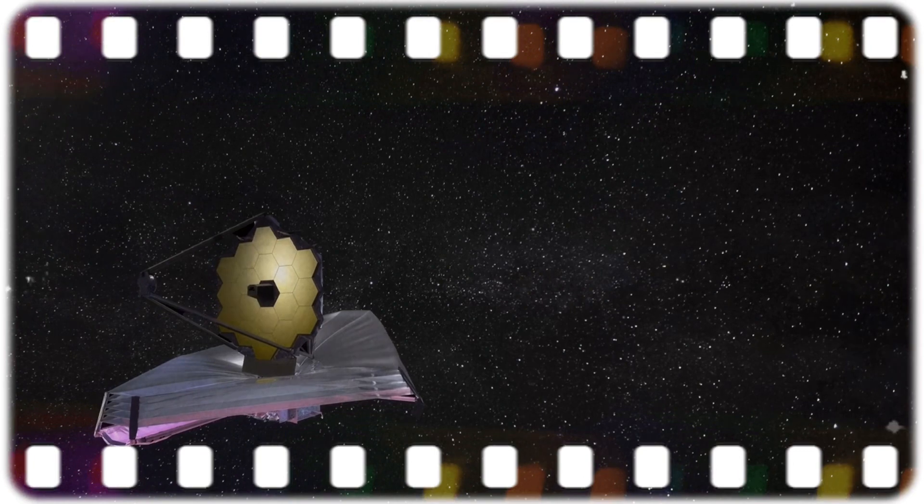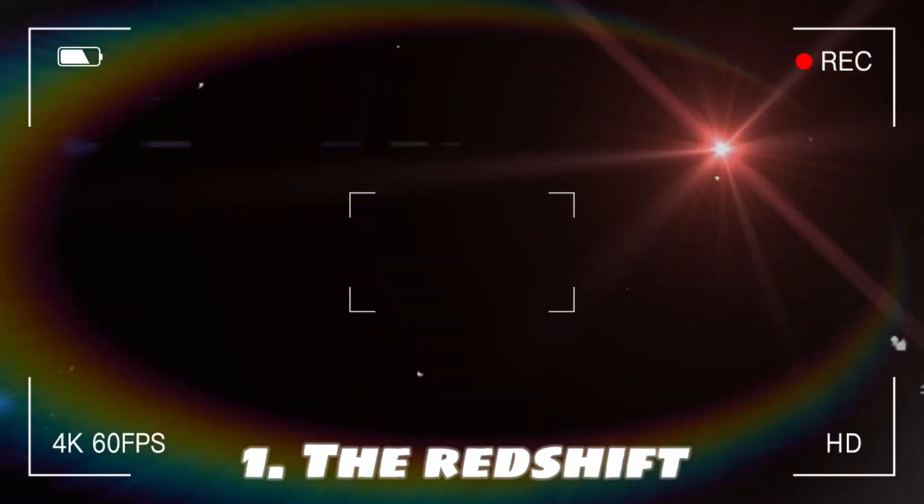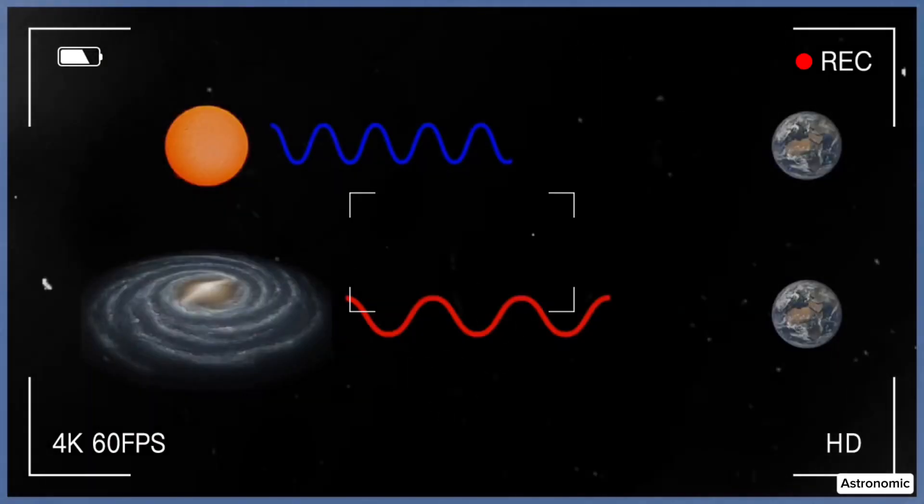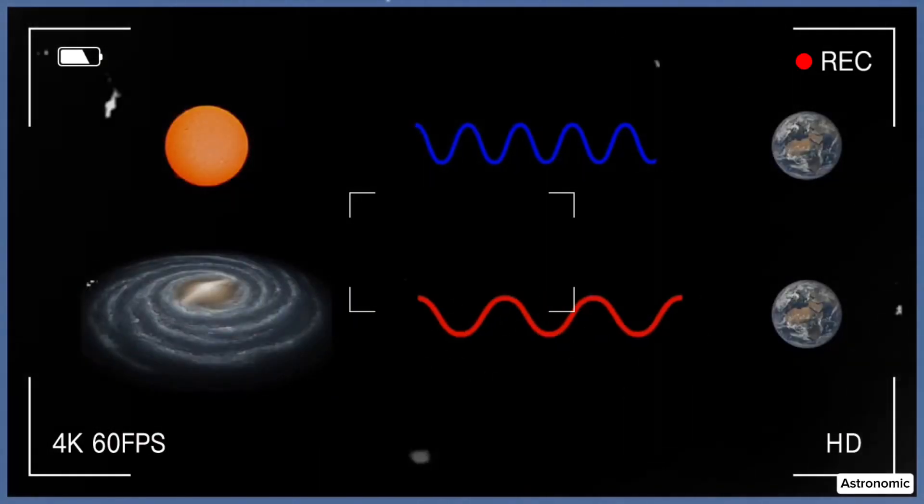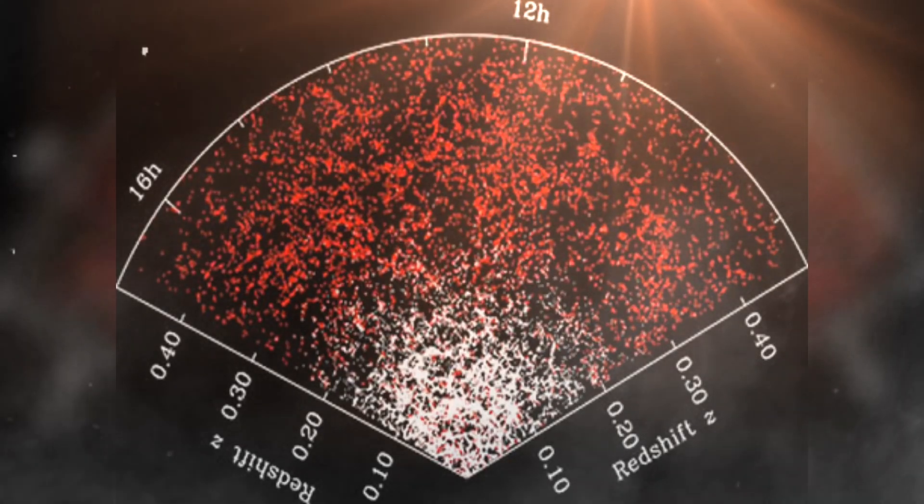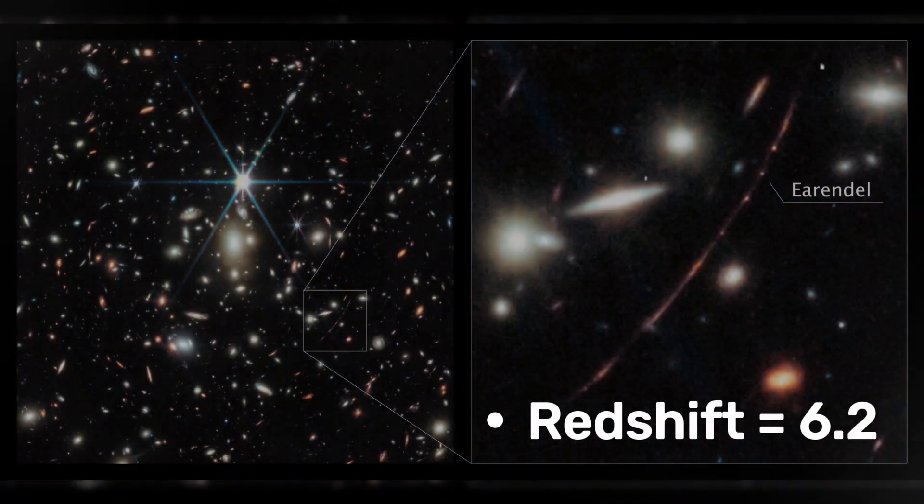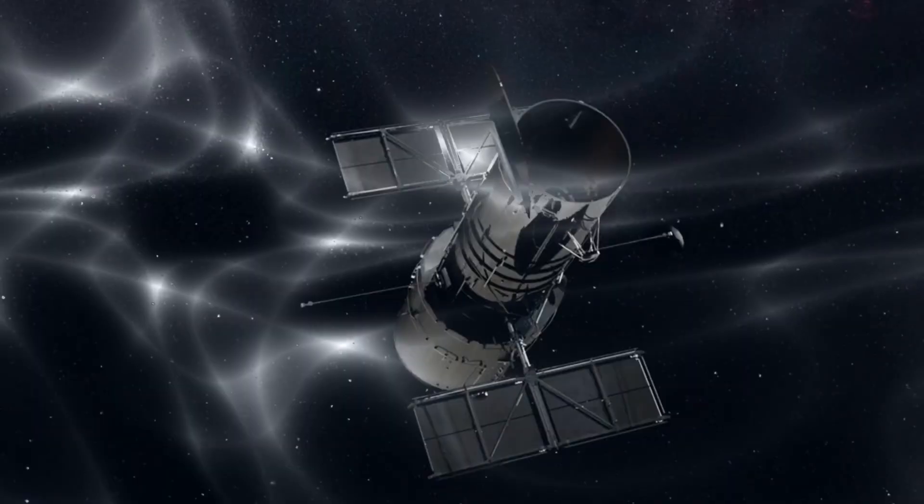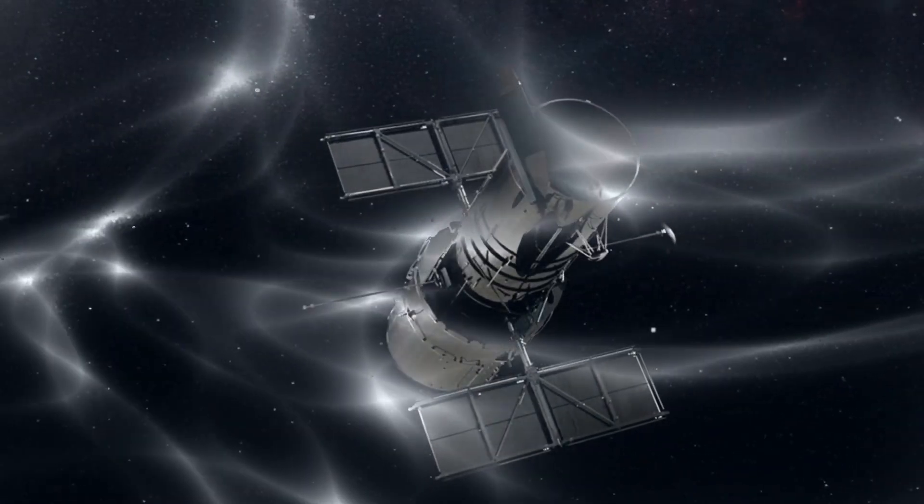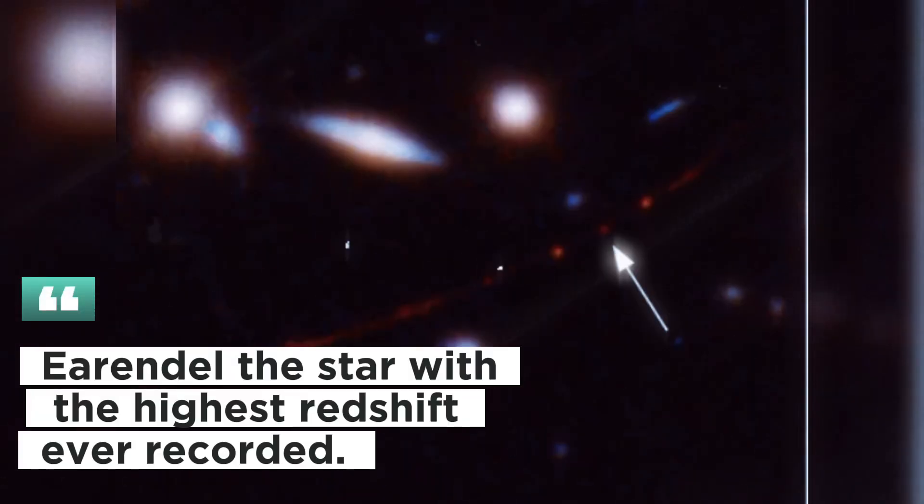The observations made by the James Webb Space Telescope are notable for three main reasons. The redshift of the star is the first. Distances to distant objects in space can be calculated using redshift. Redshift is represented by a number we call Z. When Z is zero, the event is occurring at this very moment. A larger value for Z indicates that an object is further away from Earth and further back in time. We now know that Earendel has a redshift of 6.2 according to recent web-based observations. As predicted, this confirms the early 2022 findings from the Hubble Space Telescope, making Earendel the star with the highest redshift ever recorded.